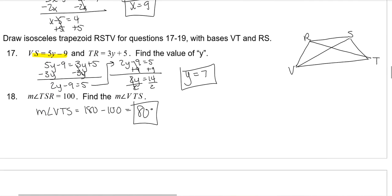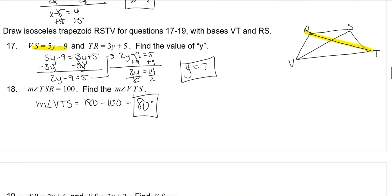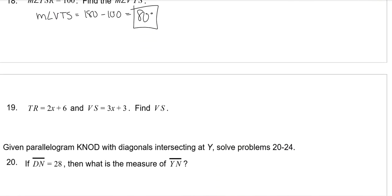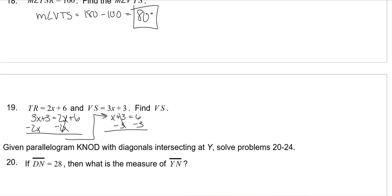TR is one diagonal and VS is the other. Set them equal and solve: subtract 2X from both sides, giving X plus 3 is equal to 6. Subtract 3 on each side: X is 3. So VS equals 3 times 3 plus 3, which is 9 plus 3, equals 12.